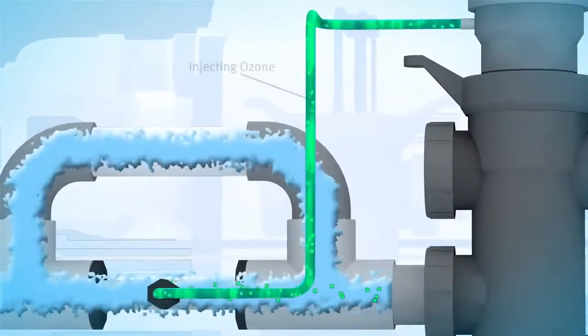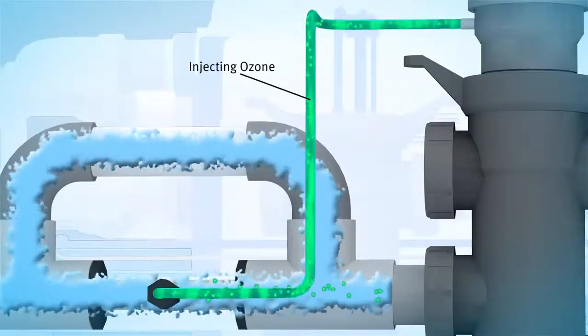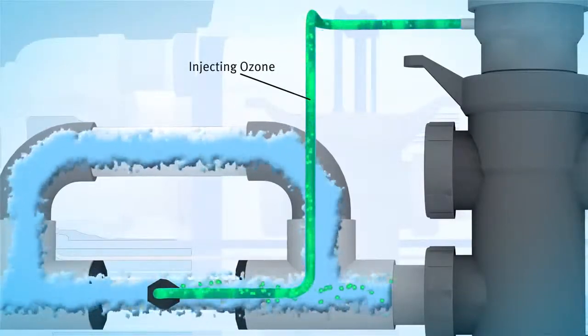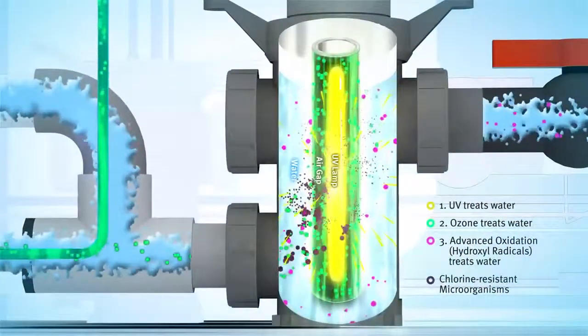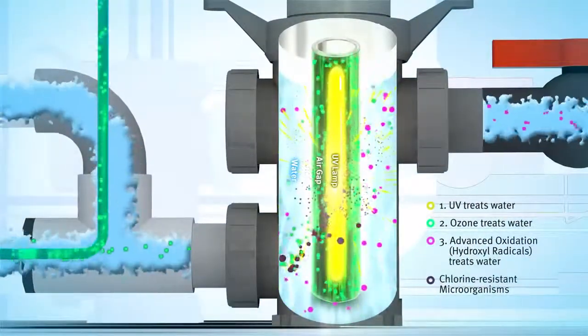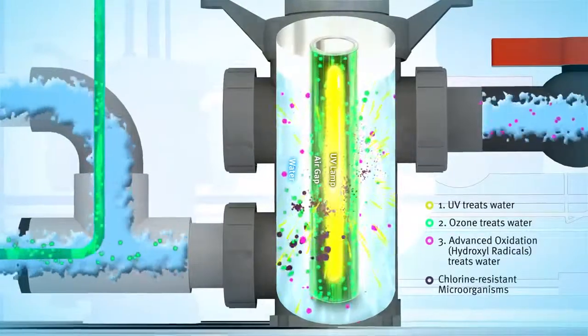The Hydro-Rite UV Ozone System injects ozone into the pool water just upstream of the main reaction vessel. This ozone-treated water is then exposed to potent ultraviolet rays as it passes through the vessel.